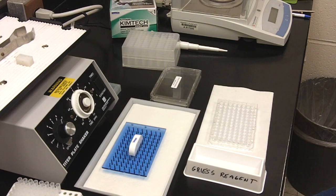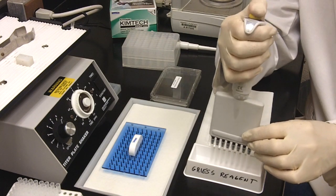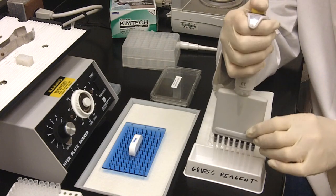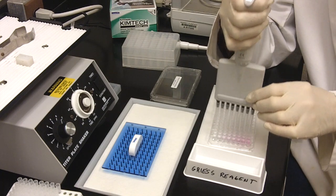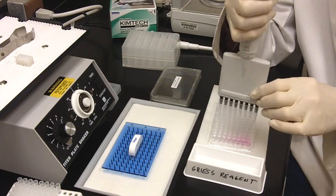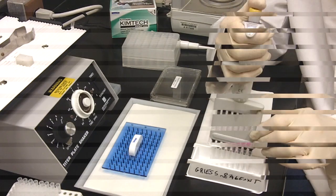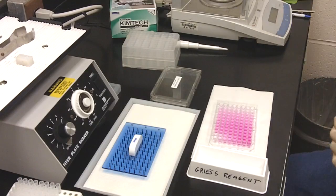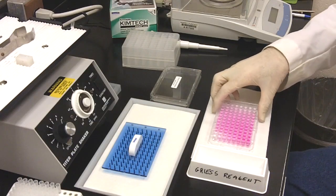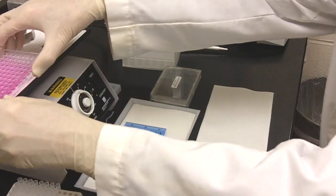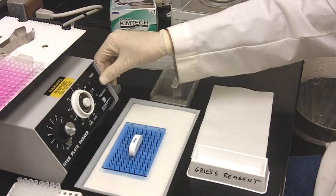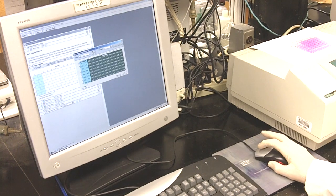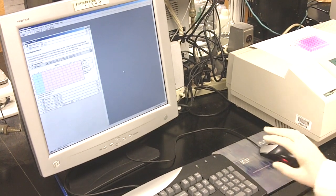60 microliters of Griess reagent is then added to each well. The microplate is placed back on the shaker for five minutes to allow color development.